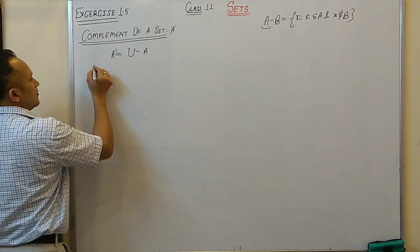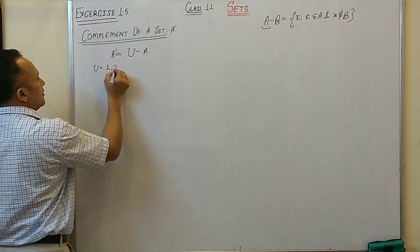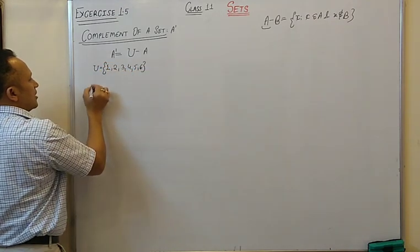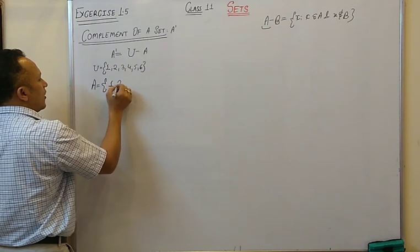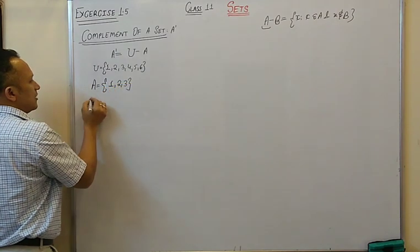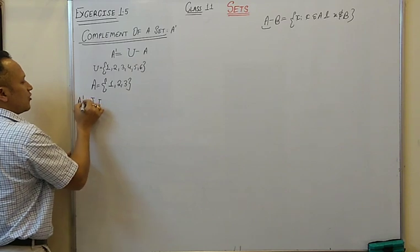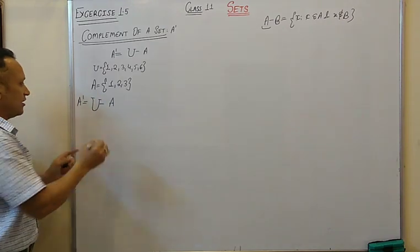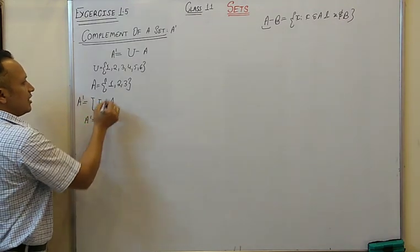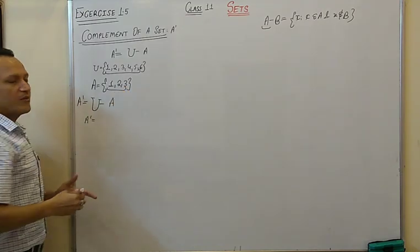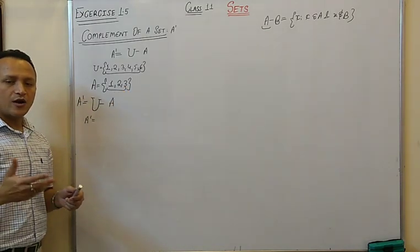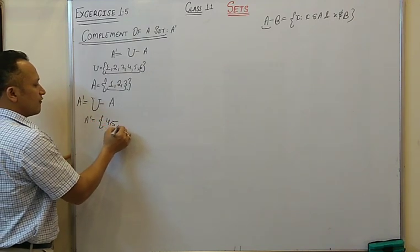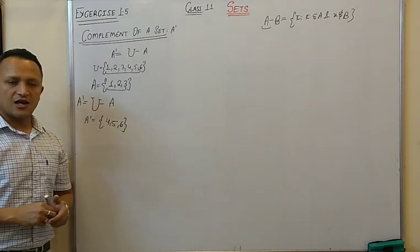Let's go with an example. Suppose the universal set is {1, 2, 3, 4, 5, 6} and set A is {1, 2, 3}. What would be A complement? A complement is Universal minus A. The common elements to both are 1, 2, 3. After discarding 1, 2, 3 from the universal set, we are left with {4, 5, 6}. So A complement is {4, 5, 6}.